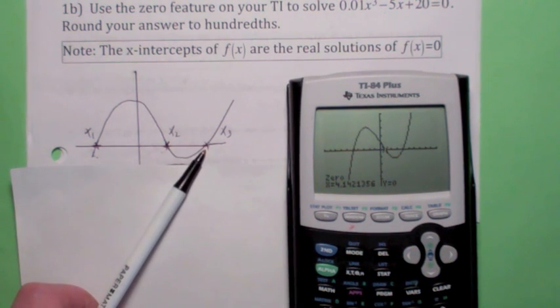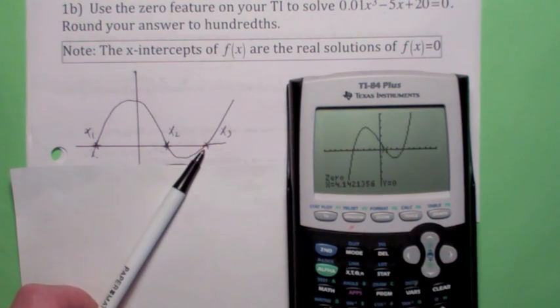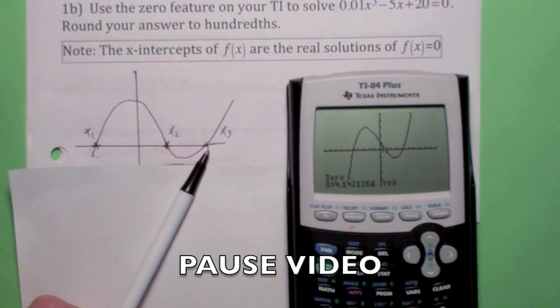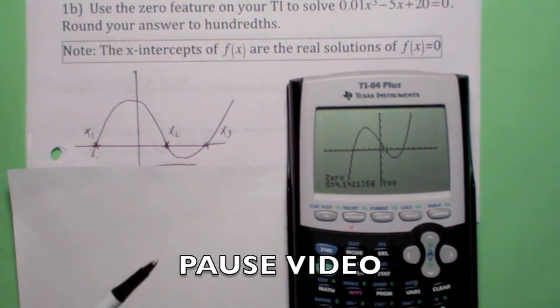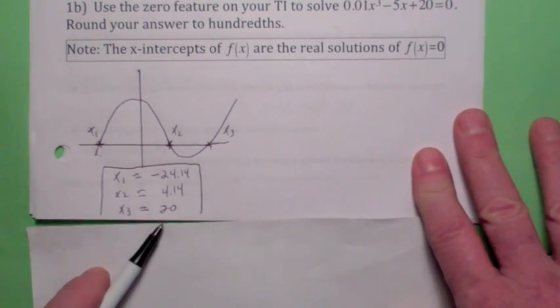Okay, why don't you try the 3rd one? Go ahead, start off by hitting 2nd calc, and see if you can find, approximate that 3rd x-intercept. Go ahead, hit the pause button. Okay, the value I got was 20. Did you get 20 for the third one?